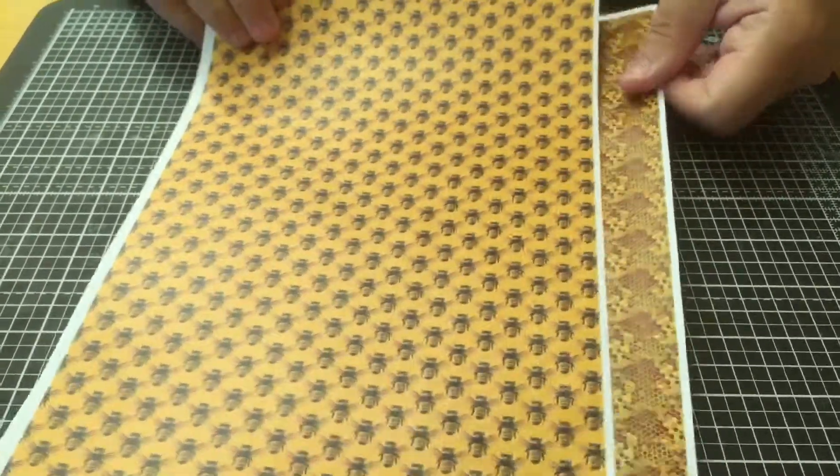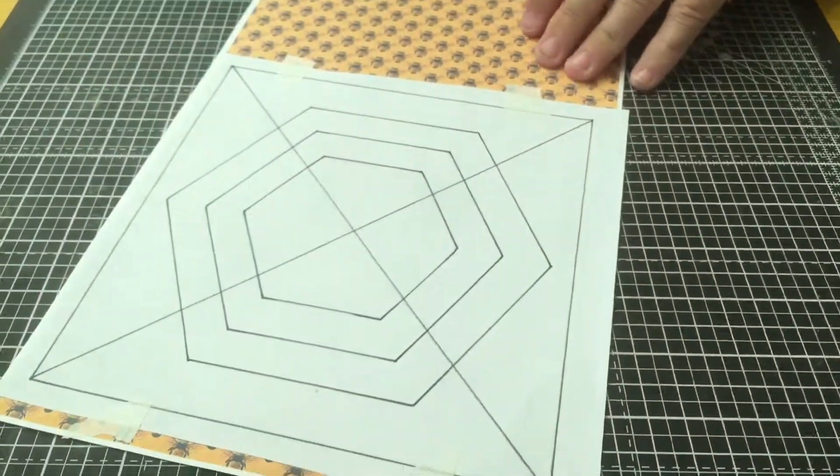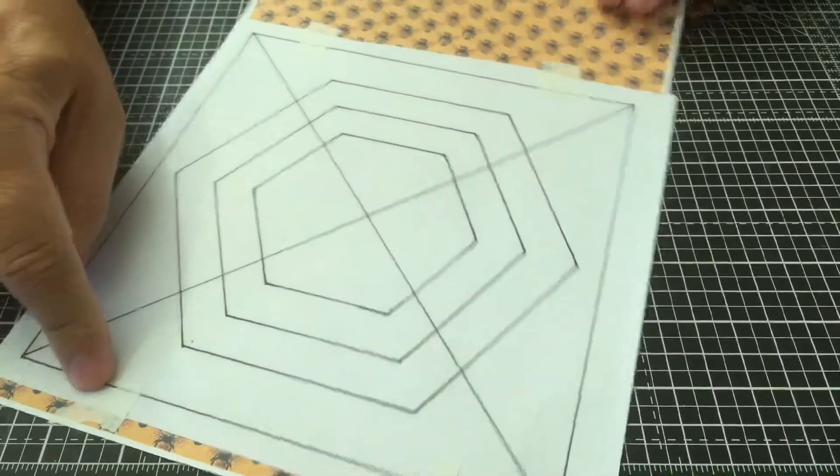You've got various background papers I'm using in this case when making this design. What I've done here is just cut out roughly the design and held it in position with a little bit of masking tape.